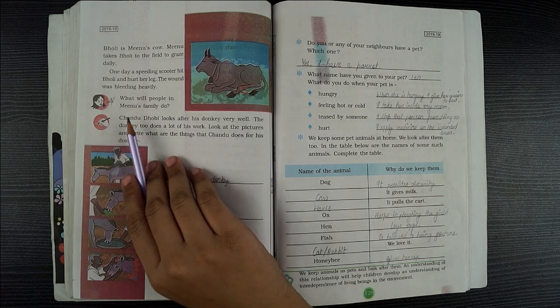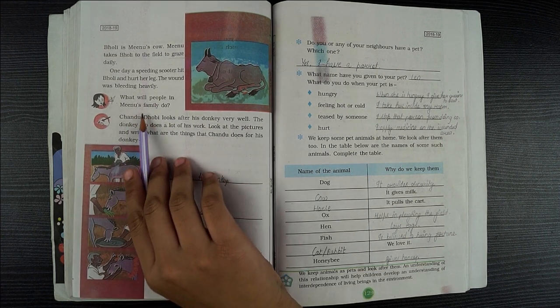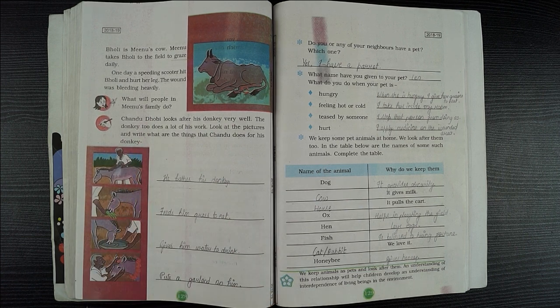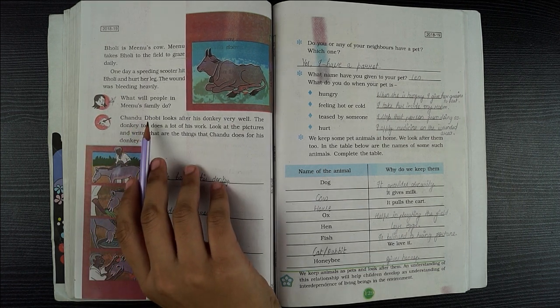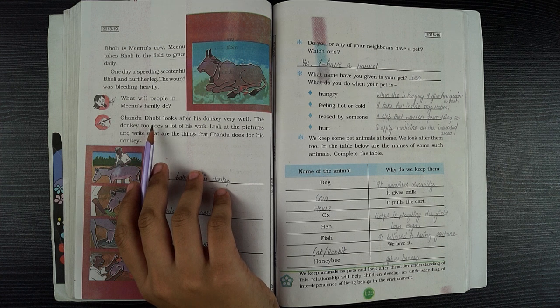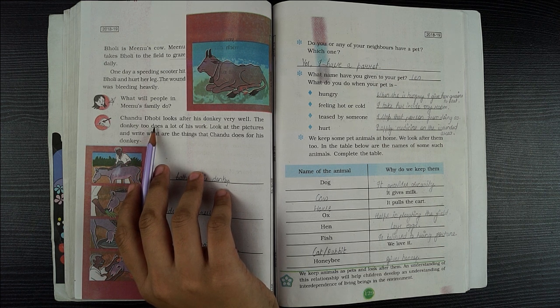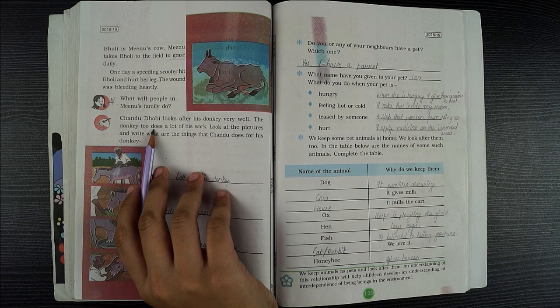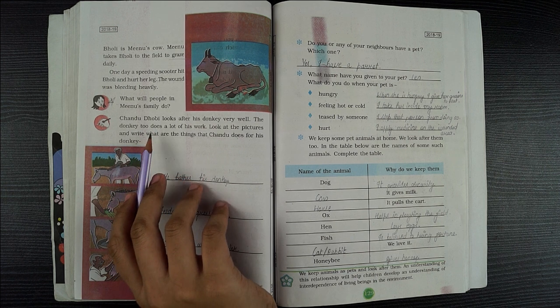What will people in Minou's family do? Minou's family would wash Bolly's wound with water and put medicines on the wound.